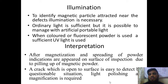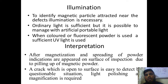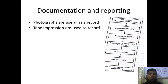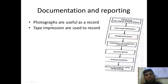The crack which is open to the surface is easy to detect. But the questionable situation is when light polishing and magnification is required. Light polishing means we go for a secondary operation, and magnification means we go for some kind of glasses by using which we can see the crack properly. After completing all these things, we try to record them using photographs and tape impressions. This is the complete set of operations: cleaning, surface preparation, demagnetization, magnetization, addition of particles, illumination, interpretation, documentation and reporting. Photographs are very useful for future reference.